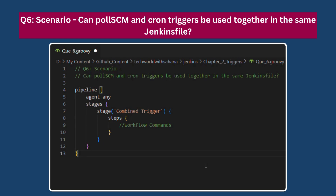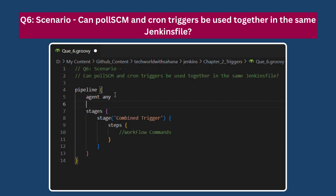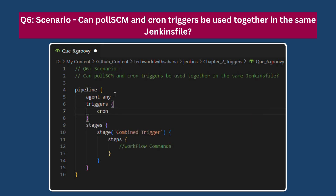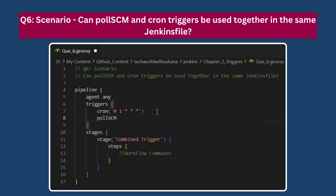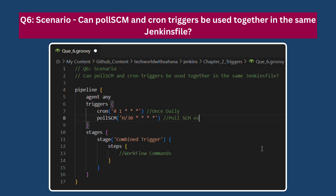Moving on: Can pollSCM and cron triggers be used together in the same Jenkins file? The answer is yes — both cron and pollSCM can be used together inside the triggers block. For example, you can specify a cron schedule to run the job daily at 1am, and also include a pollSCM trigger to check for code changes every 30 minutes. This means the job will always run once daily at 1am regardless of code changes, and will also poll the source code repository every 30 minutes, triggering a build only if changes are detected.